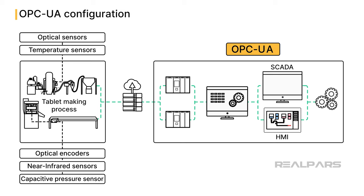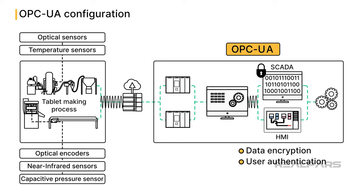OPC UA allows the sampling of data at high frequencies, giving it the ability to capture every nuance of the production process in real time. Given the proprietary nature of pharmaceutical processes, the stringent security measures that OPC UA offers, ranging from data encryption to user authentication, are non-negotiable. With OPC UA's ability to support the continuous archiving and recalling of process data, every batch can be traced, which is critical should recalls be required.